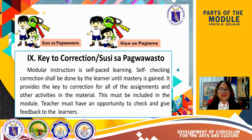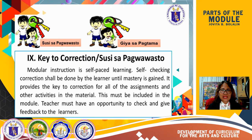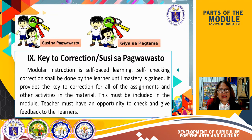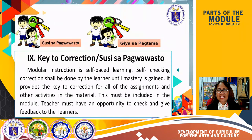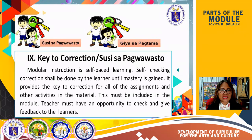Part 9 will be key correction, or susi sa pagwasto. Module or instruction is self-paced learning. Self-checking correction shall be done by the learner until mastery is attained or gained. It provides the key correction for all assignments and other activities in the material. This must be included in the module, and the teacher must have an opportunity to check and give feedback. We trust the child that in the module they really would like to learn by themselves — that is why upon discovering they have failed to give the correct answer, the child can go back to the topic that seems not yet mastered.